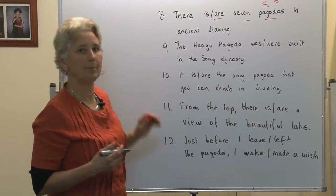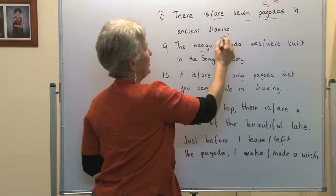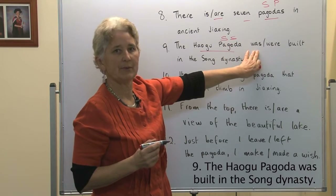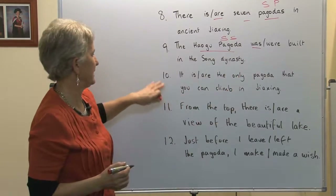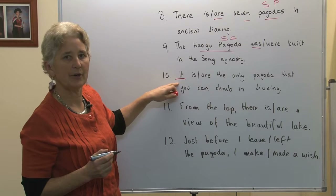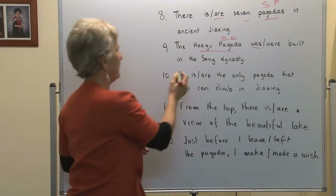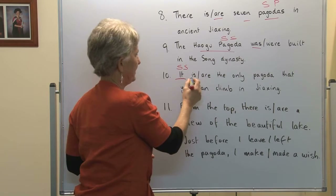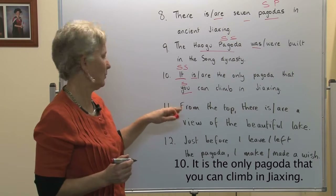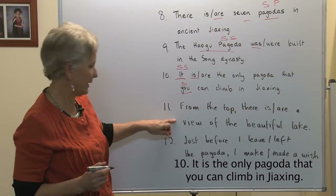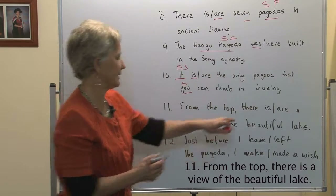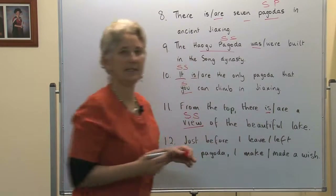Number nine: the Haozi Pagoda was built in the Song Dynasty. The pagoda is the subject — it is singular — it was built, past tense. Number ten: it is the only pagoda that you can climb in Jiaxing. 'It' is the grammatical subject referring to the pagoda, singular, so it takes 'it is'. Notice 'you' is the grammatical subject of the second clause. Number eleven: from the top there is a beautiful view of the lake. Once again, the 'there is / there are' construction — a view is the grammatical subject, it is singular, and it takes the 'is' form of the verb.